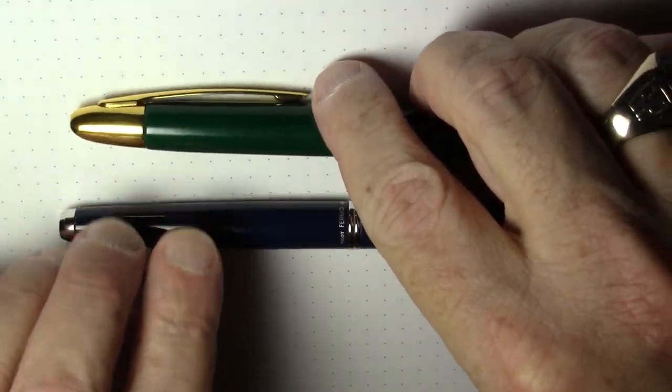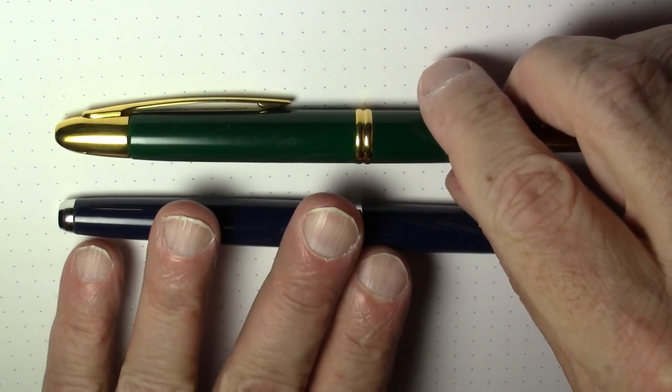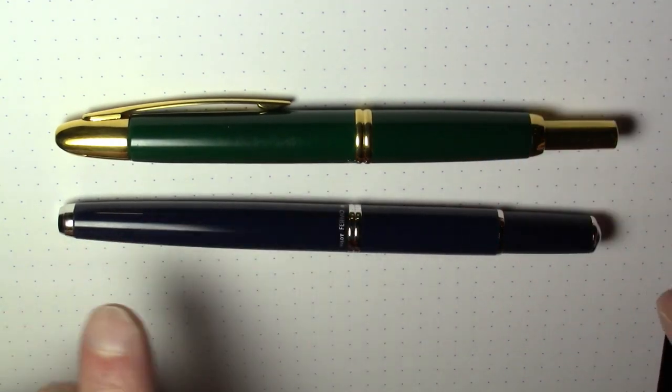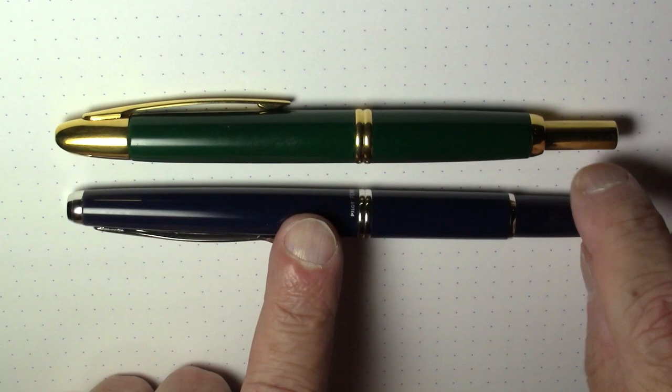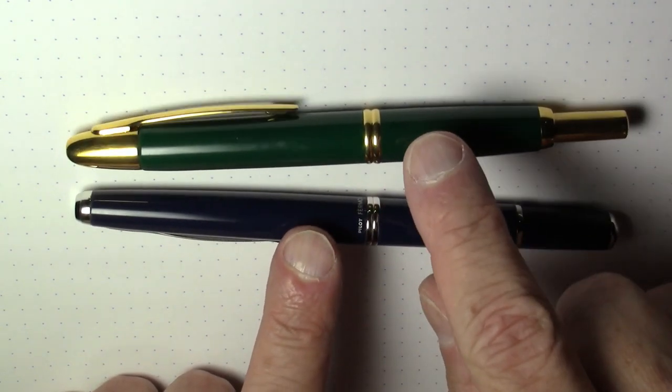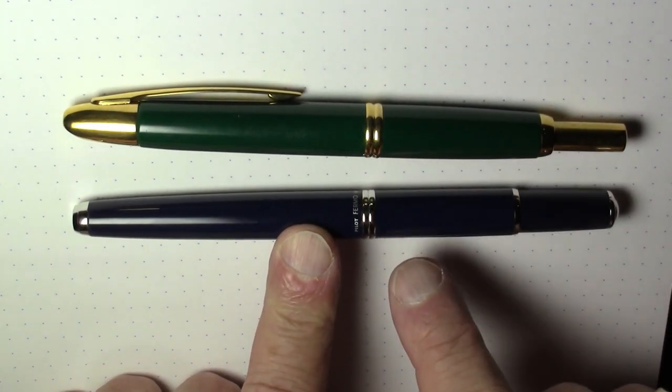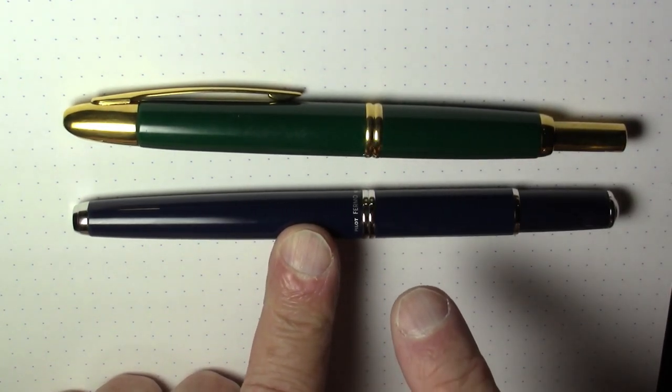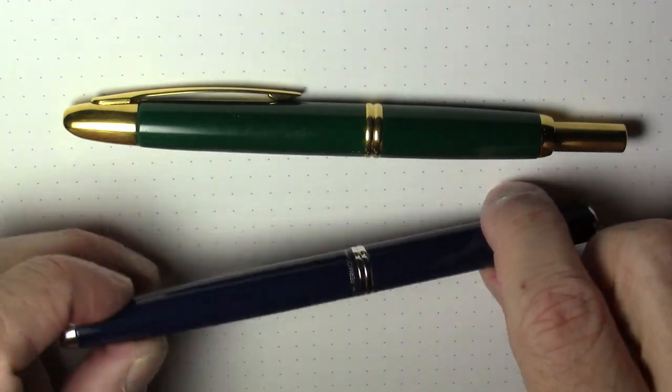Comparison to a normal Vanishing Point is it's a little bit heavier actually. The normal Vanishing Point weighs 31 grams and the Fermo weighs 34 grams. So it's a tiny bit heavier.